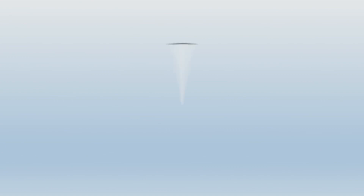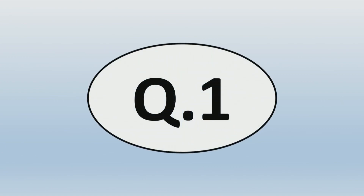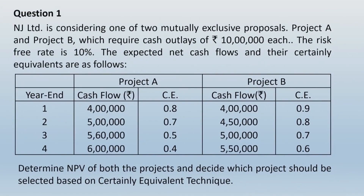Let us take a calculative example. Question 1: NJ Limited is considering two mutually exclusive proposals — Project A and Project B — each requiring a cash outlay of ₹1 lakh. The risk-free rate is 10%. Expected net cash flows and their certainty equivalents are given for years 1 to 4. Determine the NPV of both projects and decide which should be selected using the certainty equivalent technique.